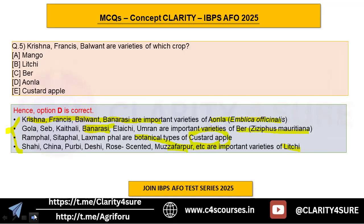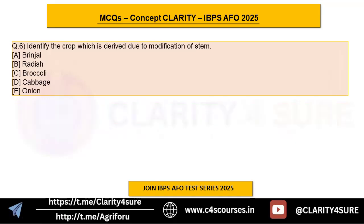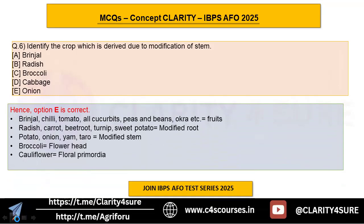When you revise, try to relate as much as you can from one question. Question number six: identify the crop which is derived due to modification of stem. Options are brinjal, radish, broccoli, cabbage, and onion. The answer is option E, onion.